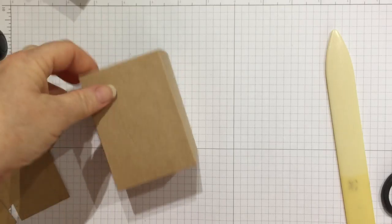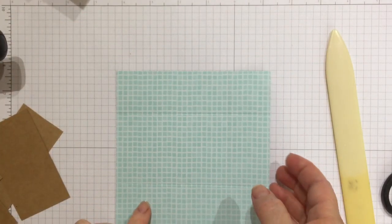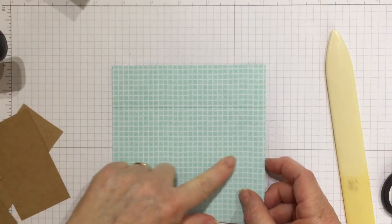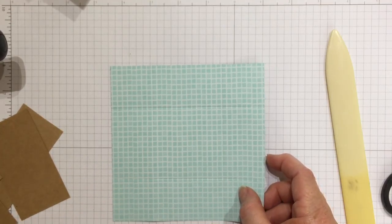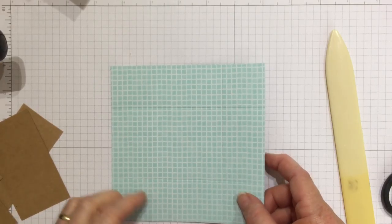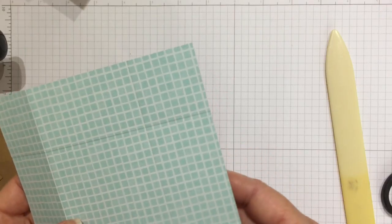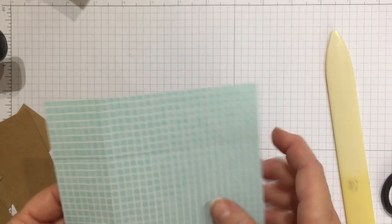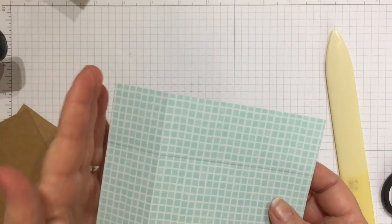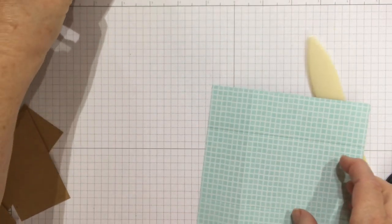For your lid, I've got a piece of designer series paper that I've chosen - I love this color, it's Pool Party. This is five and a half inches square, and I've scored this one at one and a half inches for how deep I like my sides to be.